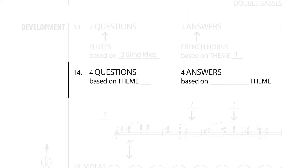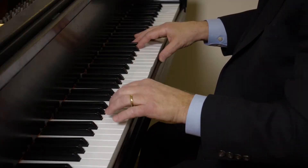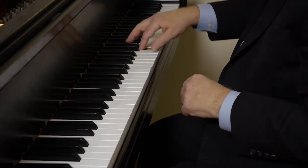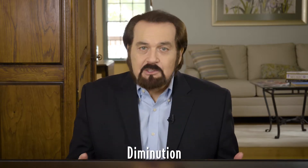Now look at number 14, where there are four pairs of questions and answers. Again, figure out which themes are used. The question is Theme 1, and the answer is the transition theme. But also notice how Dvorak has changed the character of both of these. Theme 1 is now in a diminution version of itself, in a major key.